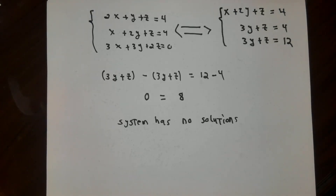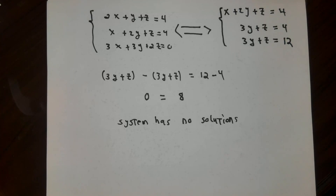I want to do one more example of this general type. Then in the next discussion, we'll start talking about better ways to write this, and also talk about some particular forms like the echelon form and the reduced row echelon form, which will be informative to us as well.